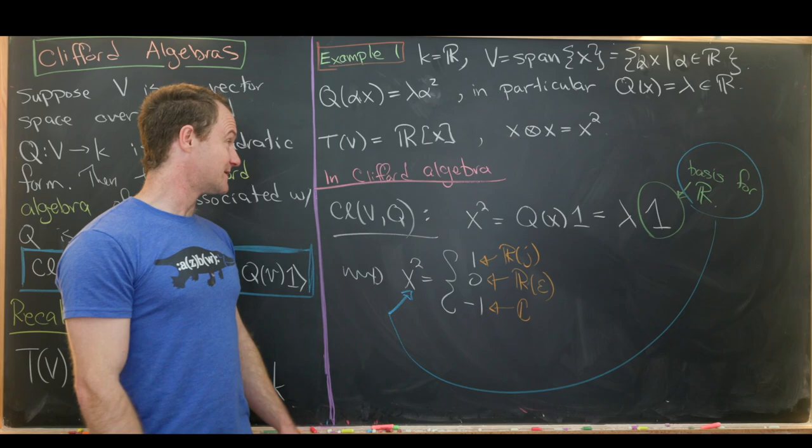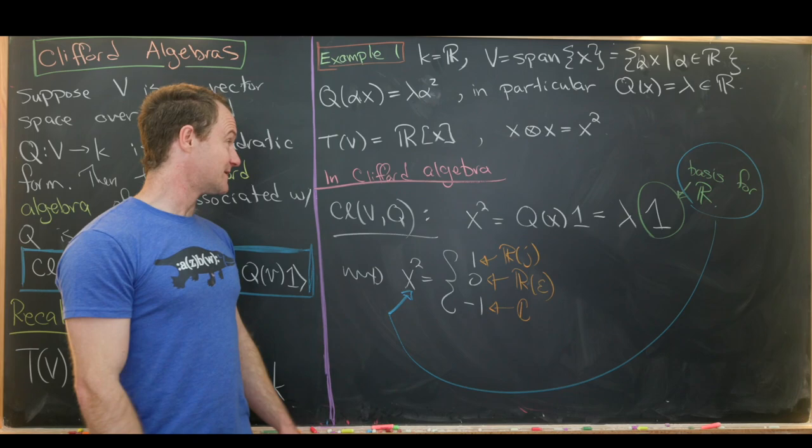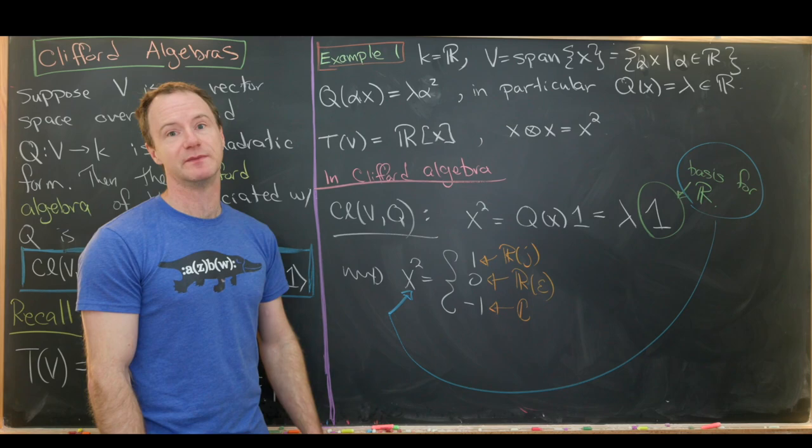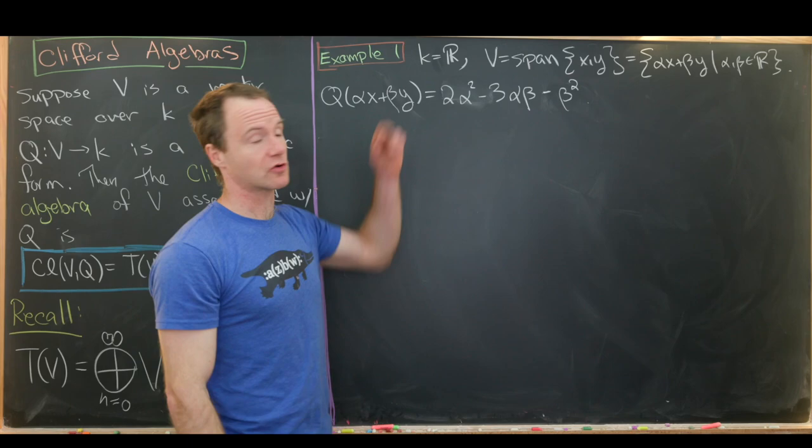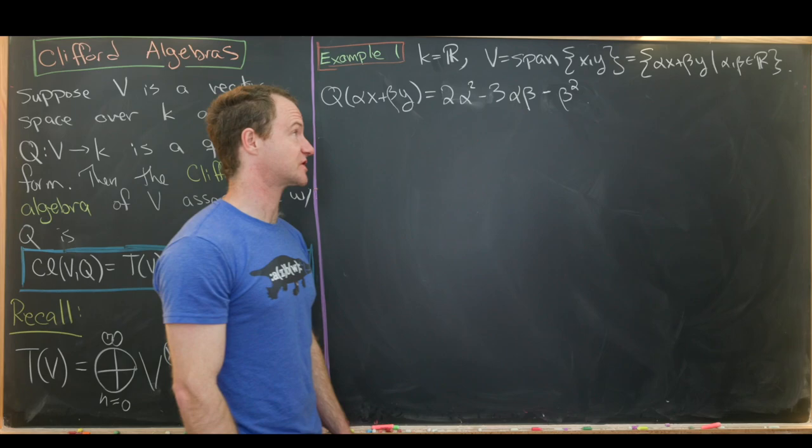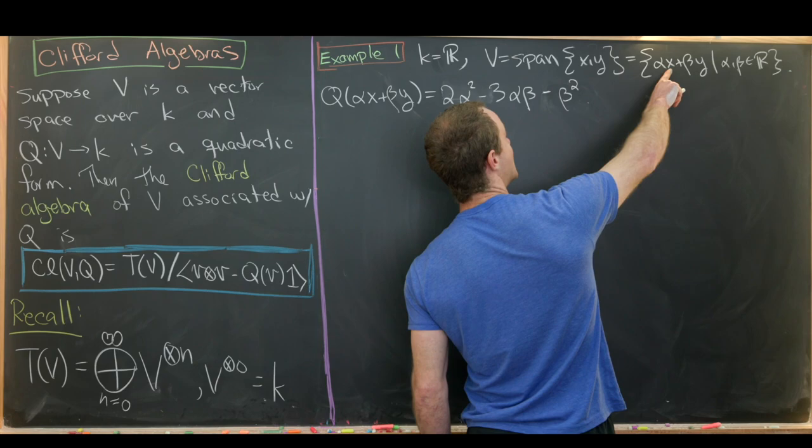Now let's look at a two-dimensional example. So again, our ground field is the real numbers, but now V is a two-dimensional vector space over ℝ, spanned by x and y. So everything in V is a linear combination of x and y — of the form αx + βy, where α and β are in ℝ.